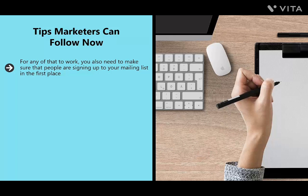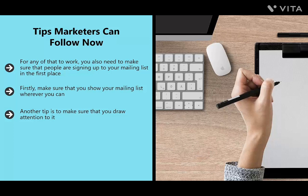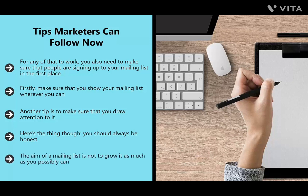This could be combined with smart recommendations to improve the likelihood of buying even more, and is already being used by some big brands. To make any of this work, you need people signing up to your mailing list in the first place. Make sure your mailing list is visible wherever you can — at the bottom of posts and in sidebars so it's visible on every page. Draw attention to it by occasionally explaining why it's a good opportunity. Always be honest: the aim is not just to grow your list as much as possible, but to grow it with highly targeted visitors.